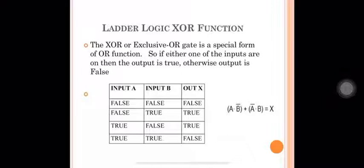XOR gate, or exclusively OR gate, is a special form of OR function. If either one of the inputs is ON, then the output is TRUE; otherwise the output is FALSE. When both inputs are in the same condition — both FALSE or both TRUE — the output is FALSE.